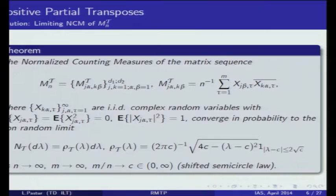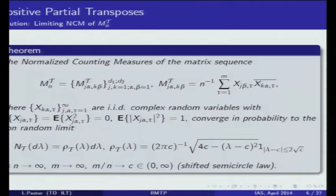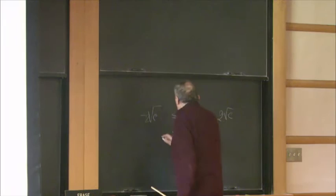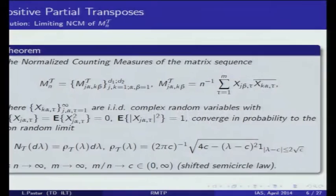Since the support of the limiting measure is explicit, and since we know the support to conclude positivity or not, at least for large enough n and m, this is the motivation for studying these problems. We have reduced the initial quantum information problem to a standard setting of random matrix theory. And just instead of Marchenko-Pastur, you have the shifted Wigner semicircle. The shift is the key point — it is a surprisingly strong change from an apparently simple operation.